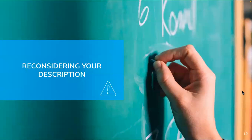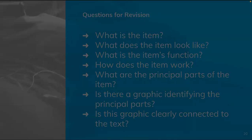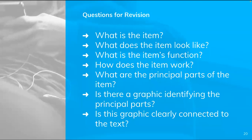A while back when you started writing your product description, I said I would give you feedback and you'd have a chance to revise it. You need to do that because you're going to include that description in your instructions. Here is a checklist for reconsidering your description, to use along with any feedback I left on your description document. Make sure you have addressed: What is the item? What does the item look like? What's the item's function? How does it work? What are the principal parts? Is there a graphic identifying the principal parts? And is that graphic clearly connected to the text?